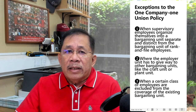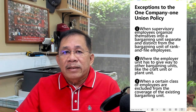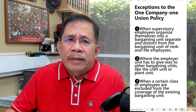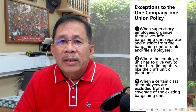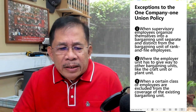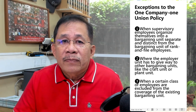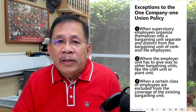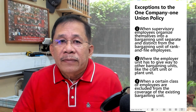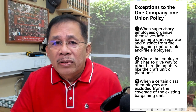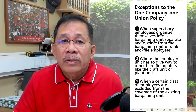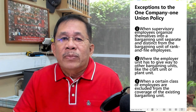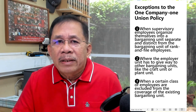The one union, one company policy cannot be applied because Article 249 expressly prohibits supervisory employees from joining the organization of rank-and-file. The second exception is when the employer unit has to give way to other bargaining units, like the craft unit or plant unit. For example, in an airline company, separate bargaining units may be formed for ground personnel, cabin attendants, and pilots. In an educational institution, separate bargaining units may be formed for teaching personnel and non-teaching personnel. In a hospital, separate bargaining units may be formed for doctors and nurses. The reason is that employees belonging to a particular class do not share mutual interest in wages and other subjects of collective bargaining.